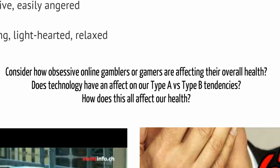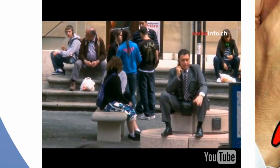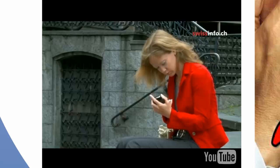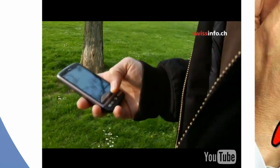Consider how online situations, such as obsessive online gamblers or gamers, are affecting their overall health. They're getting that stress response from their body, but they're sitting still. Does technology have an effect on our Type A versus Type B tendencies? It does affect our overall health. Smartphones keep us connected all the time, and some people cope better than others with new communication technologies. But if not used in moderation, they can make you ill with a series of techno-stress-related syndromes: fatigue, anxiety, or even burnout.